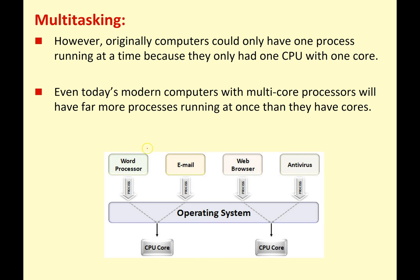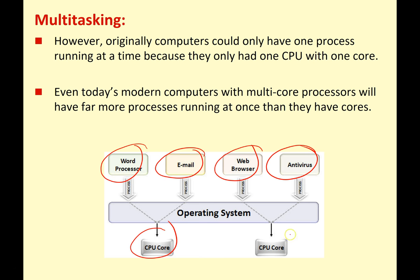So in the example here we're running a word processor, an email program, a web browser, and an antivirus. That's four applications even though we've only got a dual core CPU, which means it can process two instructions at once. So how do we run four or eight or sixteen apps on a dual core system or even an older single core system?